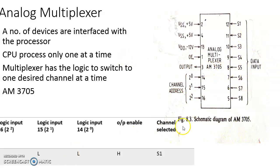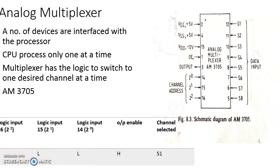The selection logic uses pin numbers 16, 15, and 14 as address lines with place values 2 raised to 2, 2 raised to 1, and 2 raised to 0 respectively. When the output enable is high and the address is 0, 0, 0, channel S1 will be selected. This is the purpose and operation of the analog multiplexer. We have now covered all the supporting circuitry associated with the analog to digital converter, including the theoretical formulation of analog to digital conversion.